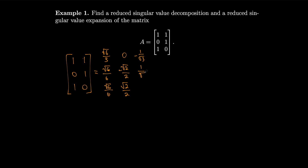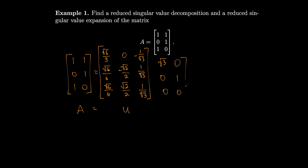So we had A equals U, now we need our sigma, so that was √3, 0, 0, 1, 0, 0. And we multiplied that by Vᵀ: √2/2, √2/2, √2/2, −√2/2.